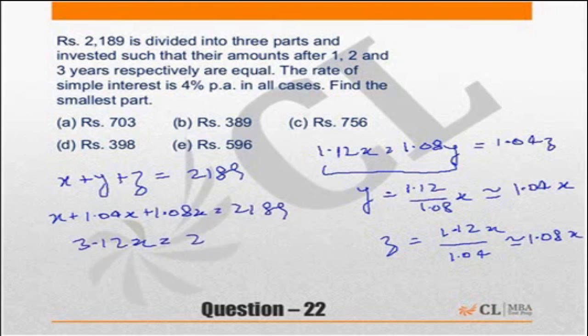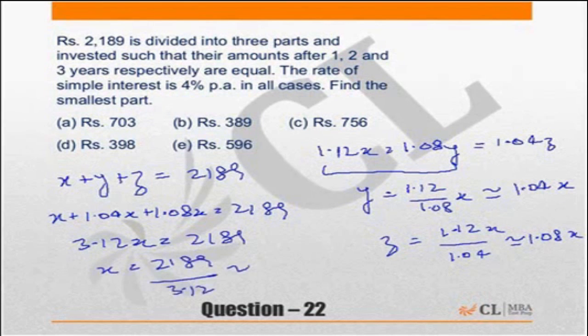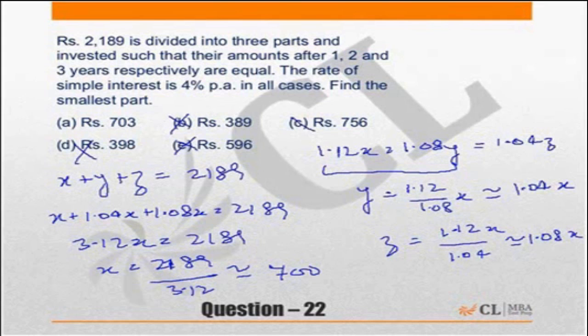So an easier thing could be if this is nothing but approximately 1.04x. Similarly this is nothing but 1.08x. I am just taking the approximate value out here. So in other words I can say x plus 1.04x plus 1.08x is equal to 2,189. So 3.12x is equal to 2,189. So x should be equal to 2,189 upon 3.12. Approximately you will get this as around 700. The correct answer is 703.